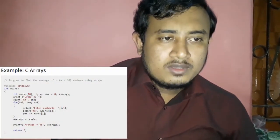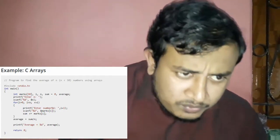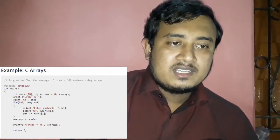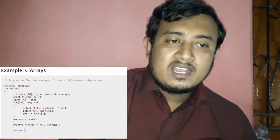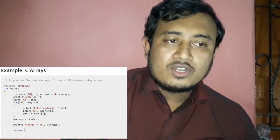To find the average of N numbers using array: first, declare the array type, array size as N, and an integer variable. Then set up a loop with index I and a sum variable. Print a prompt and use a for loop where I equals 0 and I is less than N, incrementing I with plus plus.